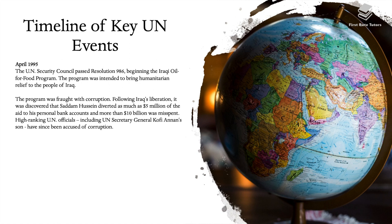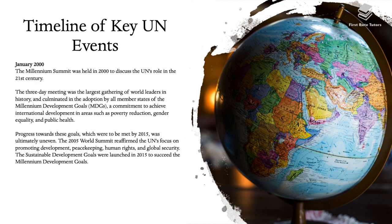In April 1995, the UN Security Council passed Resolution 986, beginning the Iraqi Oil for Food program, which was intended to bring humanitarian relief to the people of Iraq. However, it was fraught with corruption. Following Iraq's liberation, it was discovered that Saddam Hussein diverted as much as $5 billion of the aid to his personal bank accounts and more than $10 billion was misspent. High-ranking UN officials, including UN Secretary General Kofi Annan's son, have since been accused of corruption.